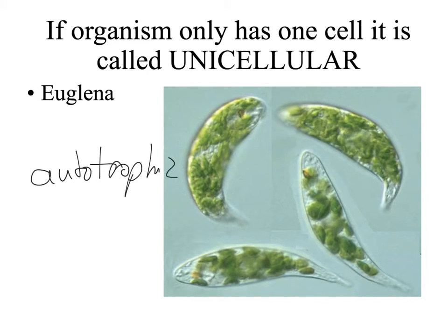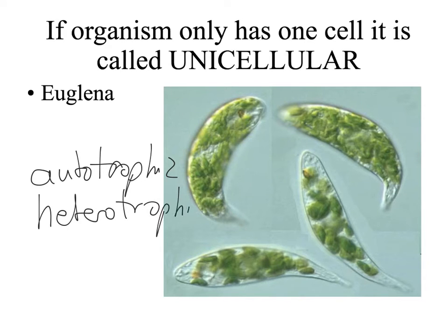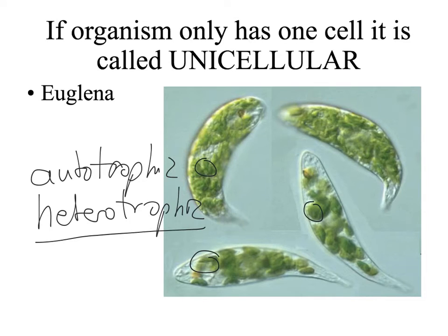Euglena is both autotrophic and heterotrophic. As you can see, it has chloroplasts — the green structures — and by the help of these chloroplasts it can produce its own food. When there is no light, it can also feed on other living organisms.